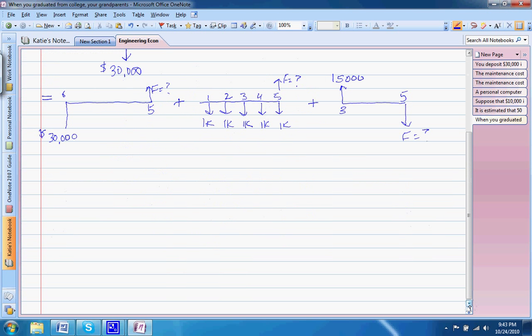So from this cash flow diagram that we now have broken out, we can solve our three different equations. Our first equation is find F given P. Our second is find F given A. And our third is find future given present as well.